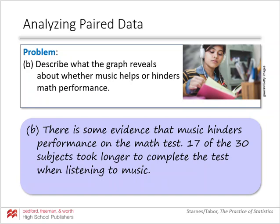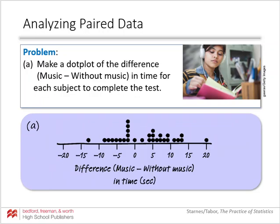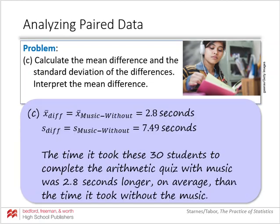We want to determine whether music helps or hinders math performance. Since slightly more than half of the students — 17 out of 30 — took longer on the math task when listening to music, meaning they had a positive difference, there is some evidence that music actually hinders students on arithmetic tasks. The mean of the differences tells us that the time to complete the quiz with music was 2.8 seconds longer, on average, than the time without music.